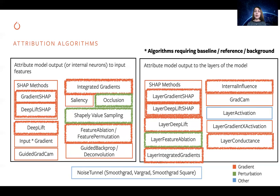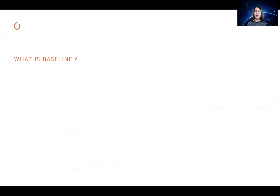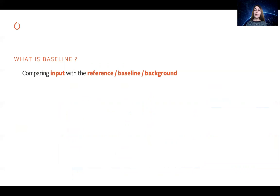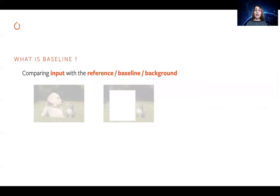Several algorithms use a so-called baseline or reference. Baseline is a very important notion in the world of attributions. In order to understand what characterizes a certain object, we compare it with another object that lacks those characteristics. Baseline helps us to blame certain parts of our input for our prediction based on a comparison of our input with another input that lacks those important characteristics.